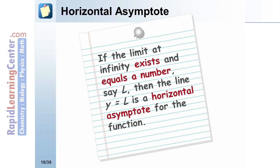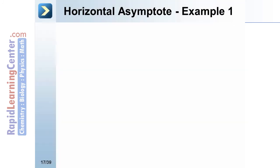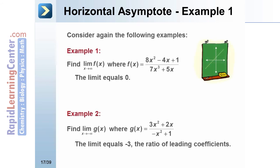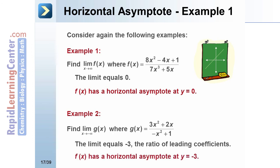If a limit at infinity exists and equals a number L, then the line y = L is a horizontal asymptote for the function. For example, since the limit as x approaches infinity of (8x² − 4x + 1)/(7x³ + 5x) equals 0, that function has a horizontal asymptote at y = 0. And since the limit as x approaches negative infinity of (3x² + 2x)/(−x² + 1) equals −3, that function has a horizontal asymptote at y = −3.